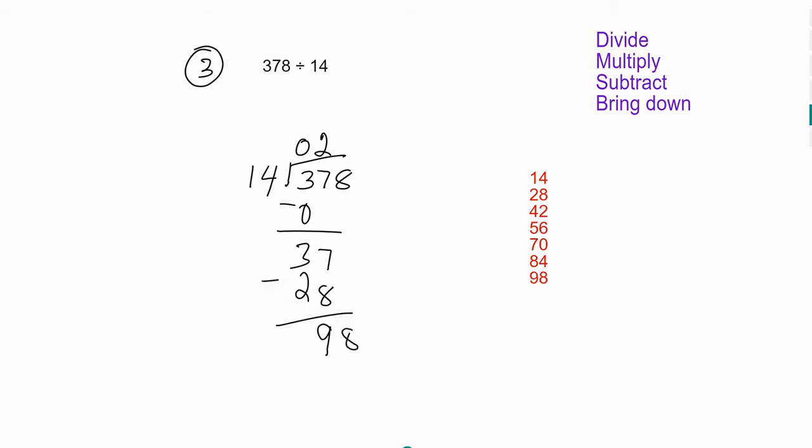So bring down the next digit, so that's 98. So here's your 98. So how many times would we multiply 14 to get 98? So we have 1, 2, 3, 4, 5, 6, 7—so times 7. So 14 goes into 98 seven times.